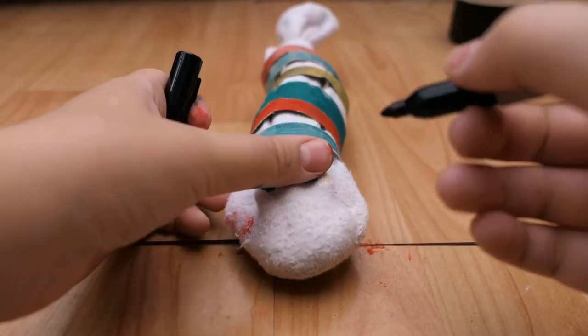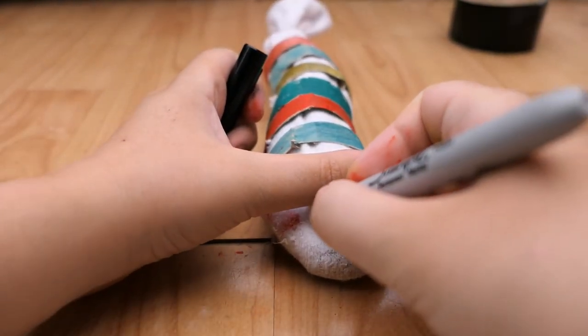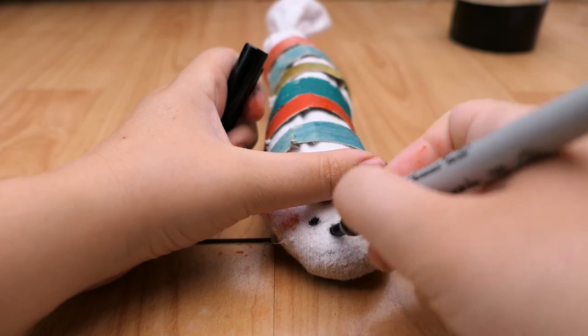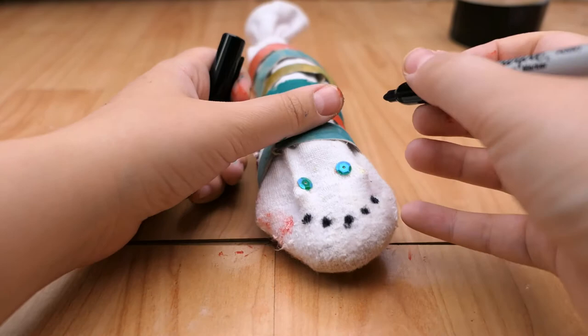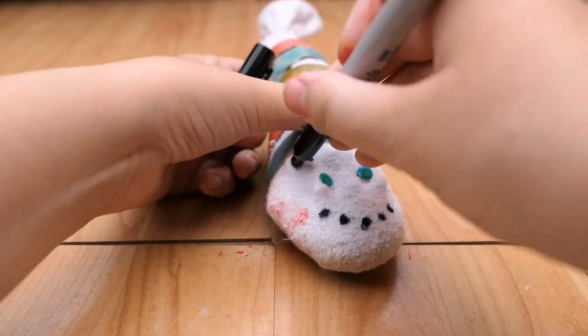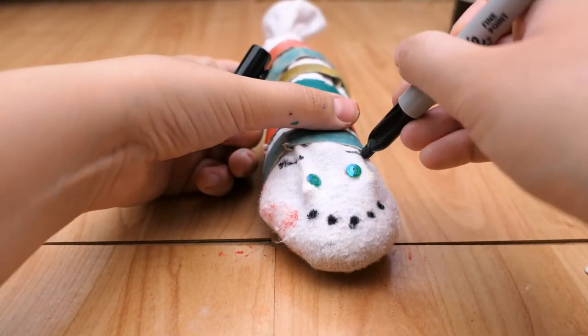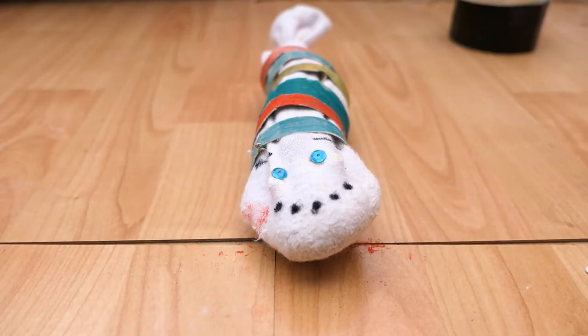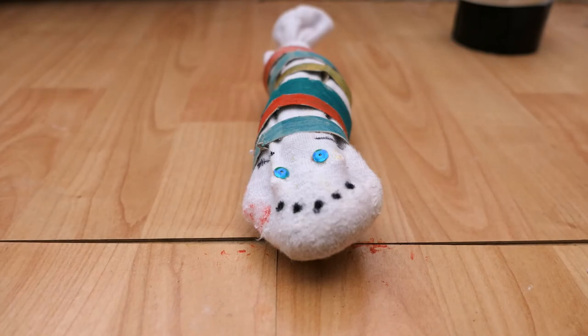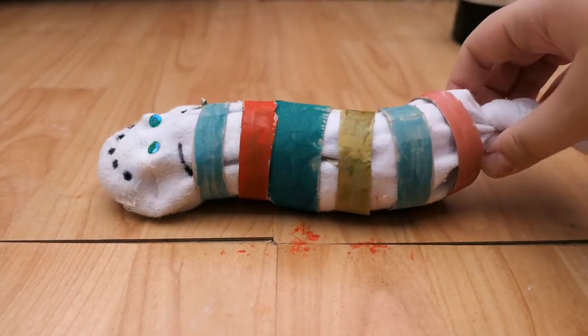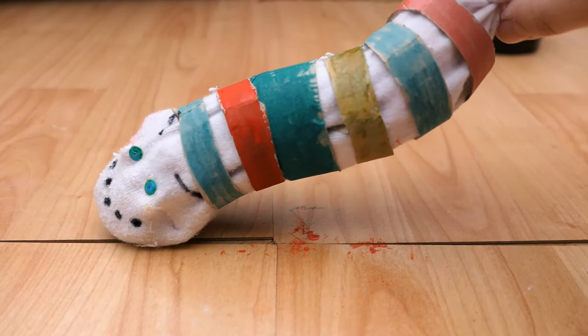I'm just going to give him a nice big smile. So I might do some dots for his smile. And I might draw some antennae. There we go, or eyebrows or whatever they look like. So there is my DIY caterpillar, my sock caterpillar. Doesn't it look cute?